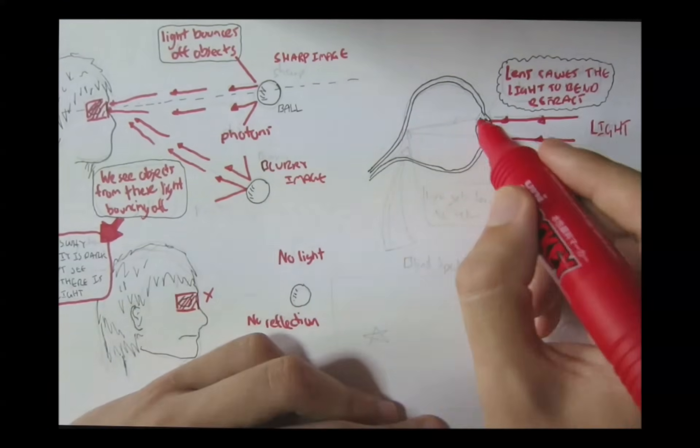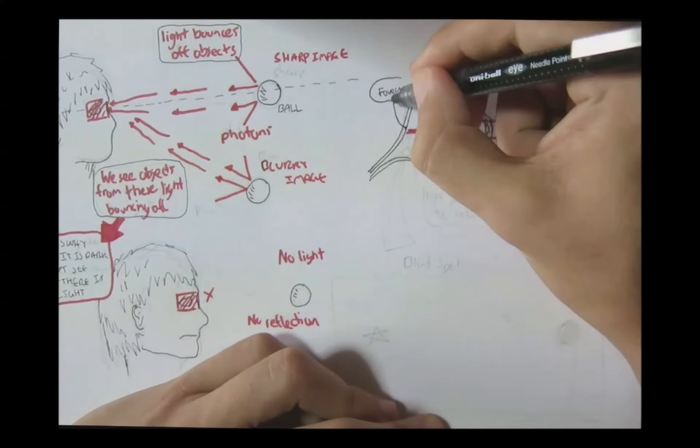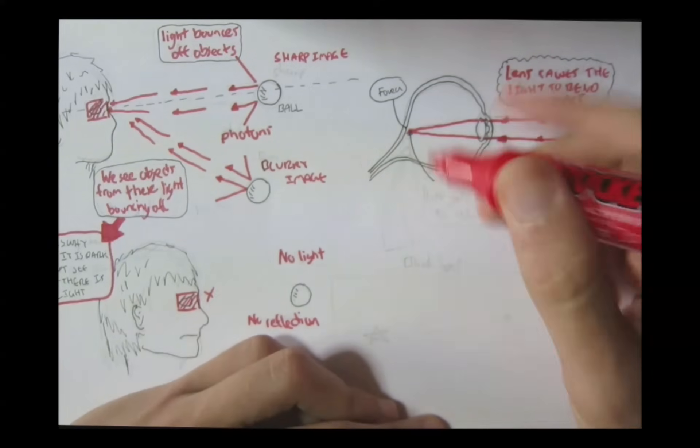It bends because of the lens present behind the pupil, which helps refract the light towards the back of the retina, towards the fovea usually.